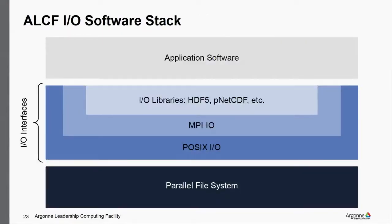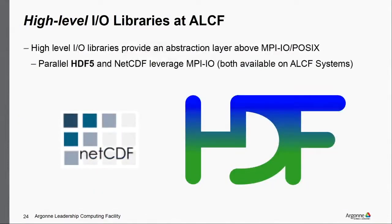What does the software stack look like on an HPC system? In cartoon fashion: you have the parallel file system on the bottom, the user application software on top. You can interact directly with the POSIX API to access the file system, or with MPI-IO which usually interacts with POSIX or something lower level. Then you have HDF5, netCDF, and other higher-level libraries that use MPI-IO underneath to get good scaling.